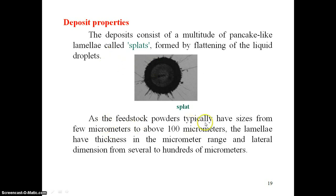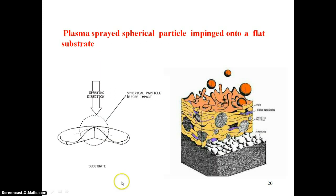Deposit properties are determined by the splats formed by liquid droplets inside the plasma jet on the substrate. Feedstock powders typically have sizes from a few microns to 100 micrometers, so the lamellae will have thickness in the micrometer range. Melted particles, which are spherical, impinge on the flat surface and form a deposition layer by layer, building a cake-like coating with thickness in the order of micrometers.